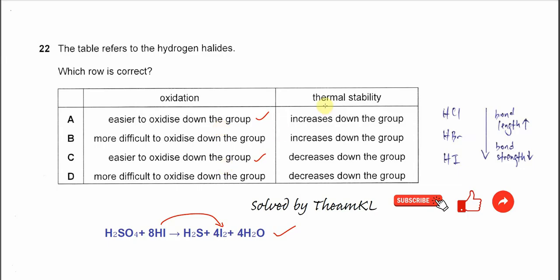How about thermal stability? Thermal stability also depends on bond length and bond energy. When down the group, the size of the halogen is getting larger because more electron shells.